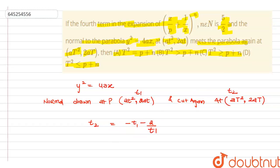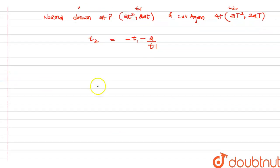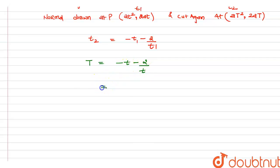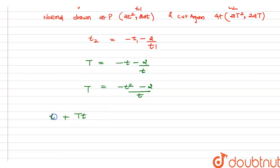From the condition of the normal, we get: t₂ = -t₁ - 2/t₁. Substituting and taking LCM, this becomes (-t₁² - 2)/t₁ = T. Rearranging all terms to one side gives: T·t + t² + 2 = 0. This is the quadratic equation in t.